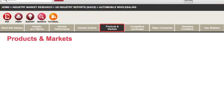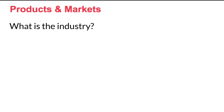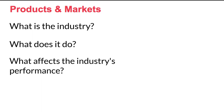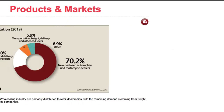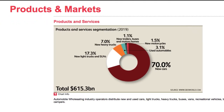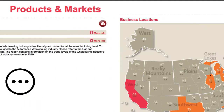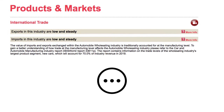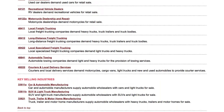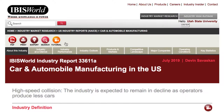Products and Markets provides you with a deeper understanding of what the industry is, what it does, and how different factors affect its performance. This section goes over the industry's major markets, products and services, locations, international trade, and more. In the Key Selling Industry section, click the industry names to view those reports.